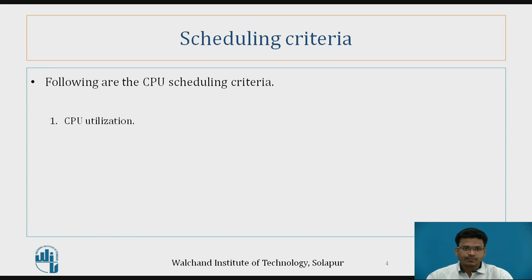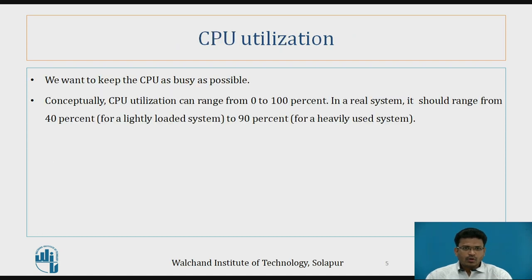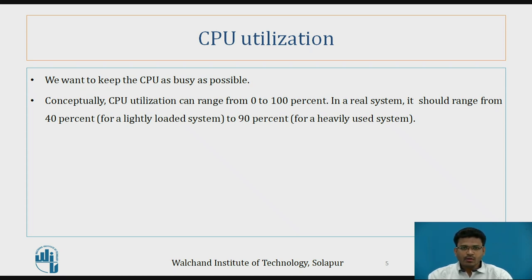The first criterion is CPU utilization. CPU utilization means keeping the CPU busy as much as possible. When processes are going to execute, a process needs the CPU and also needs the I/O devices. While switching to an I/O device, the CPU is idle, so at that time we can execute another process — that is how we utilize the CPU. Conceptually, CPU utilization can range from 0 to 100%, but in a real system it should range from 40% to 90%.